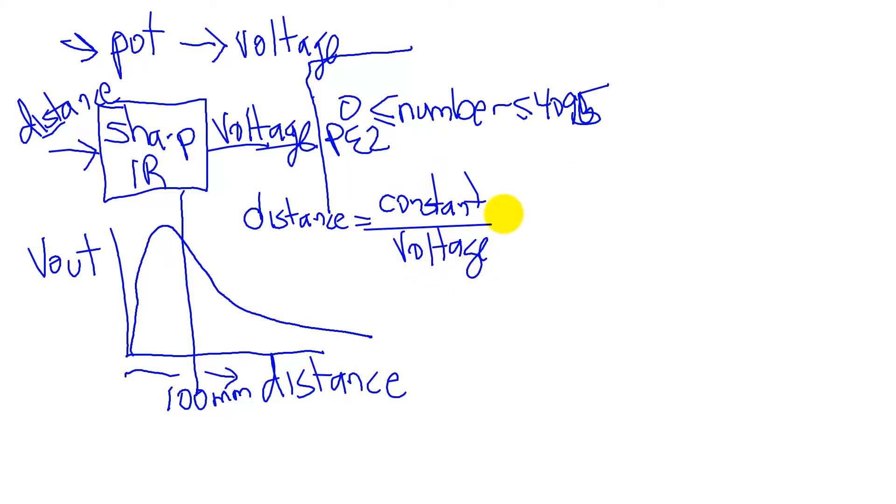And so I can use this relationship to write software such that my distance variable, this is now in software, in millimeters, is equal to some calibration constant. I did calibrate it, and so the result I got was 241,814 divided by this ADC value, this number that comes from the ADC.